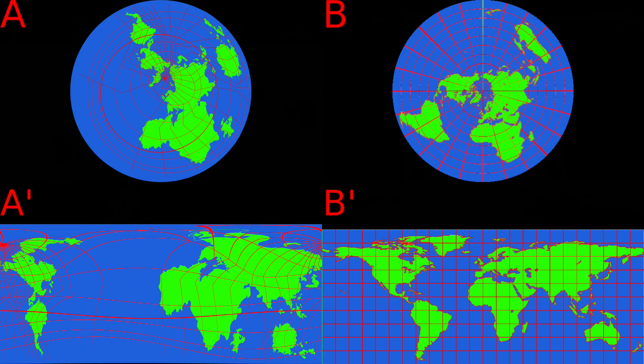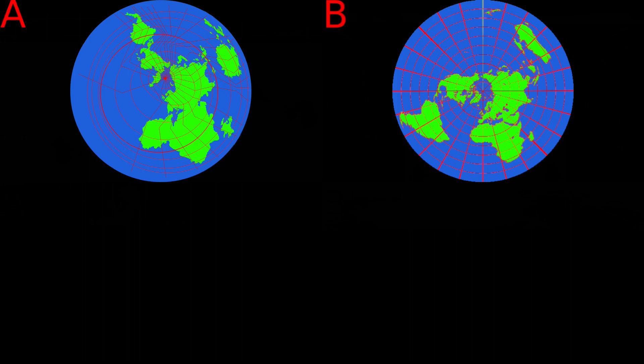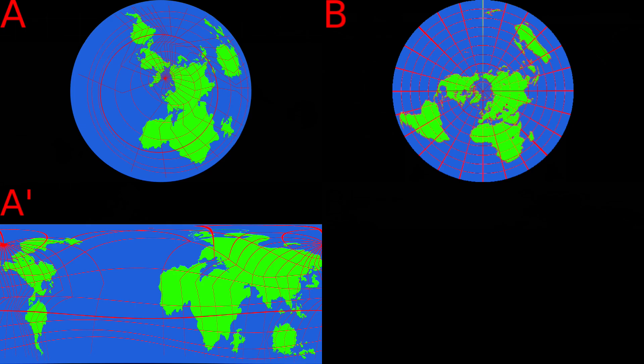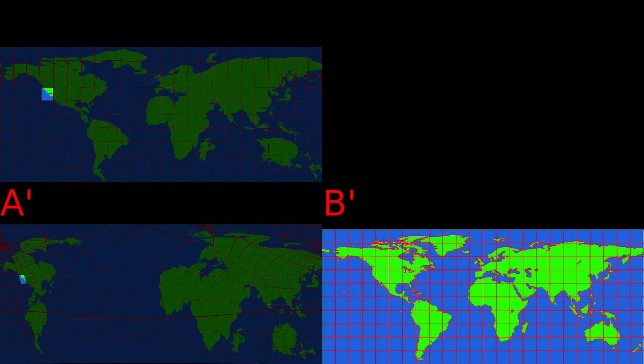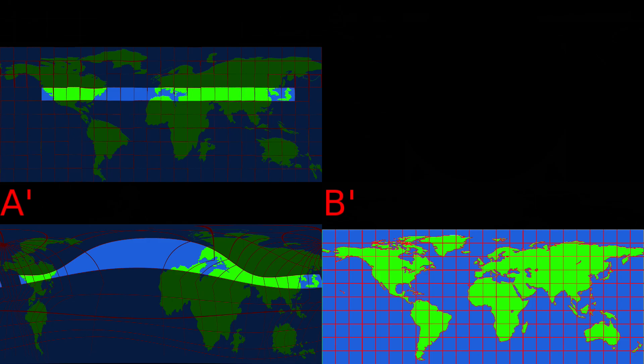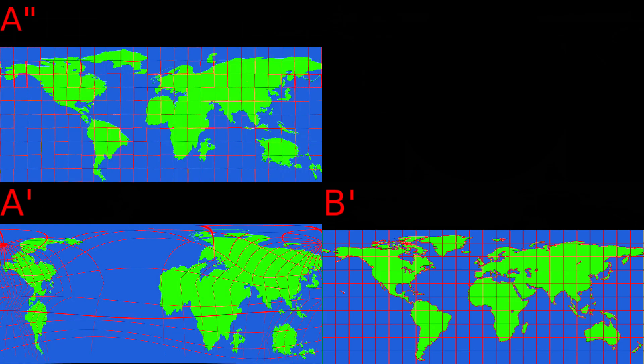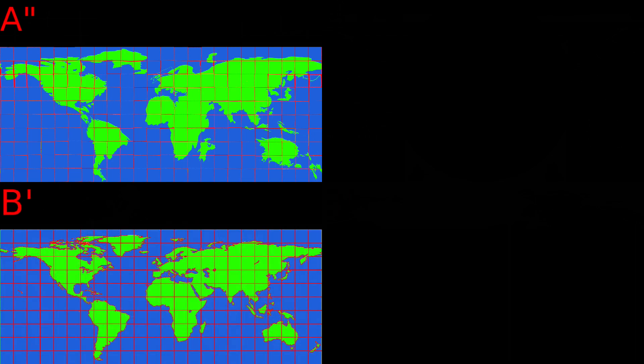Equivalence between coordinate systems is verifiable by manipulating the bounded areas into the same shape. In order to convert A into B, we will first convert the polar coordinate system A into cylindrical coordinate system A prime, and we will convert polar coordinate system B into cylindrical coordinate system B prime. B prime has squares for every bounded area, therefore the bounded areas of A prime must all be converted into squares. Upon converting the irregular bounded areas of A prime into the regular squares of A double prime, equivalence between A double prime and B prime has been verified.